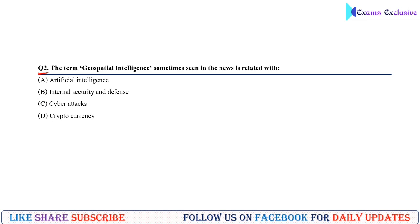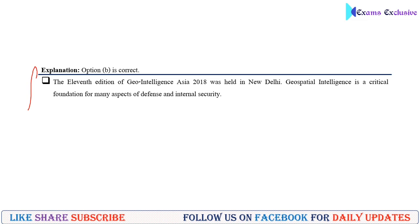Question number two: The term 'geospatial intelligence,' sometimes seen in the news, is related with — this is a very important term. It is related with international security and defense, making option B the correct answer. The 11th edition of Geo Intelligence Asia 2018 was held in New Delhi. Geospatial intelligence is a critical foundation for many aspects of defense and internal security.